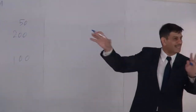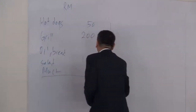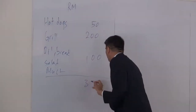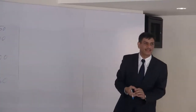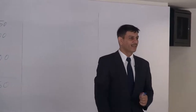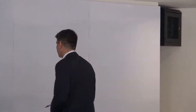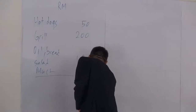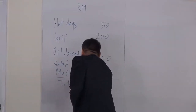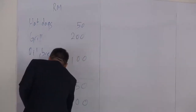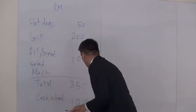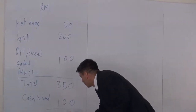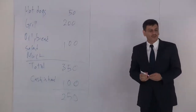We'll stop there — that's what we'll need. So the total you'll need is 350 ringgit. And let's say when you put your hand in your pocket, you have only 100 ringgit. Total needed is 350, cash in hand is 100. So you still need another 250 to start. Very basic, isn't it?